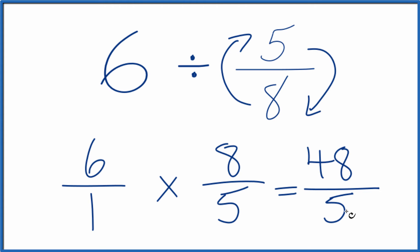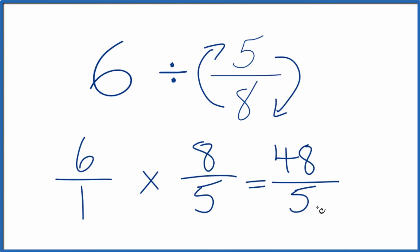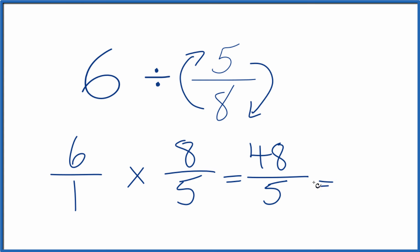We actually can't reduce this any further. We could change it to a mixed number. 5 goes into 48. Let's see. 9 times 5 is 45 with 3 left over. So we could call it the mixed number 9 and 3 fifths.